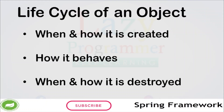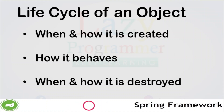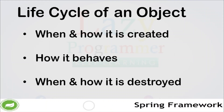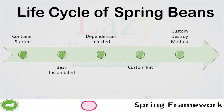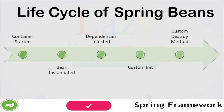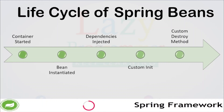The lifecycle of any object means when and how it is created, how it behaves throughout its life, and when and how it is destroyed. Similarly, the bean lifecycle refers to when and how the bean is instantiated, what actions it has performed until it lives, and when and how it is destroyed. Bean lifecycle is managed by the Spring container. When we run a program, first the Spring container gets started, then the container creates instances of beans as per the request, dependencies are injected, and finally the bean is destroyed when the Spring container is closed.